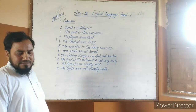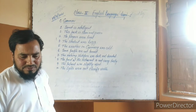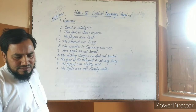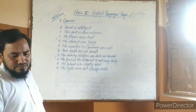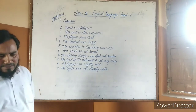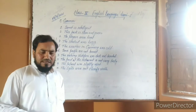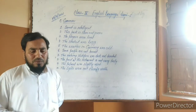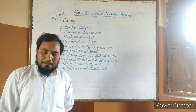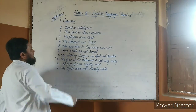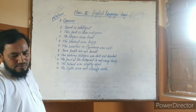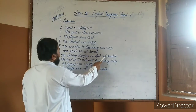Number 4: the estimate — past tense, positive, lazy. The sentence is: the estimate was lazy. Number 5: the weather in Germany — past tense, negative, cold. Number 6: some people — present tense, negative, honest. The sentence is: some people are not honest. Number 7: the platform — past tense, positive. The sentence is: the daily platform was dark and deserted.